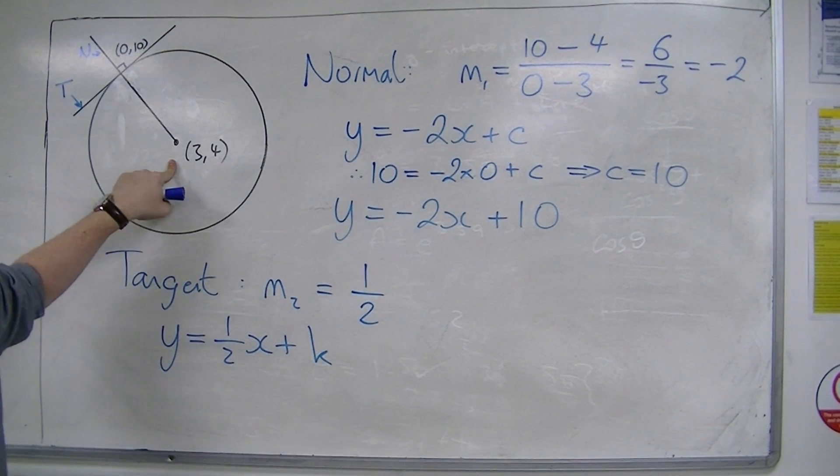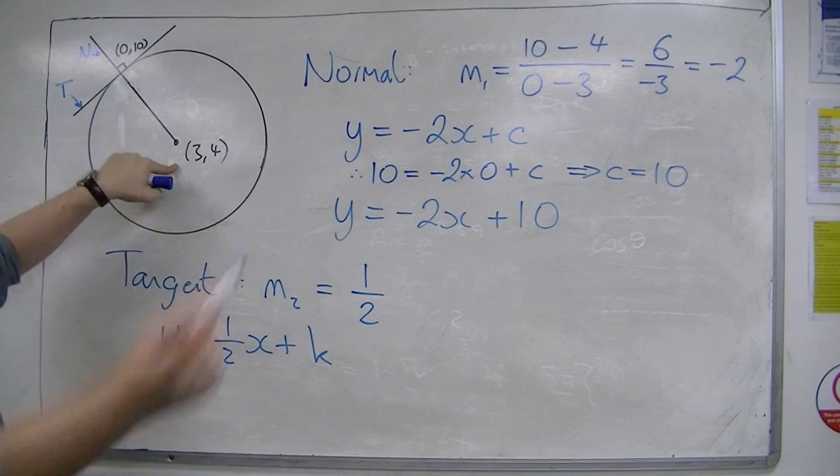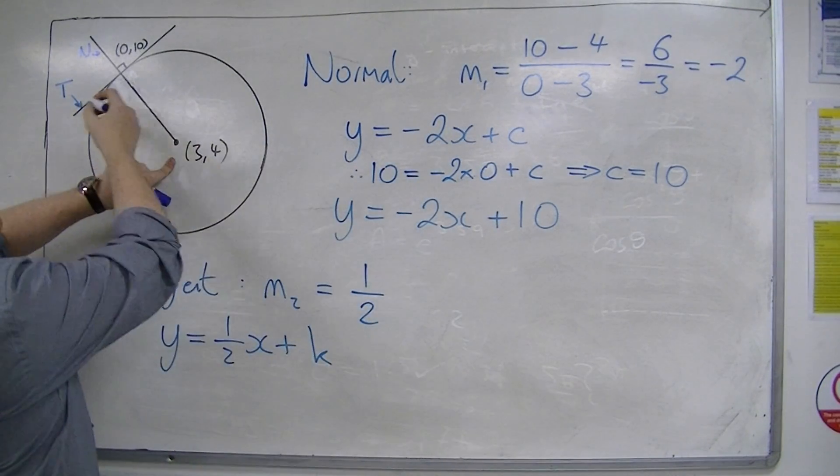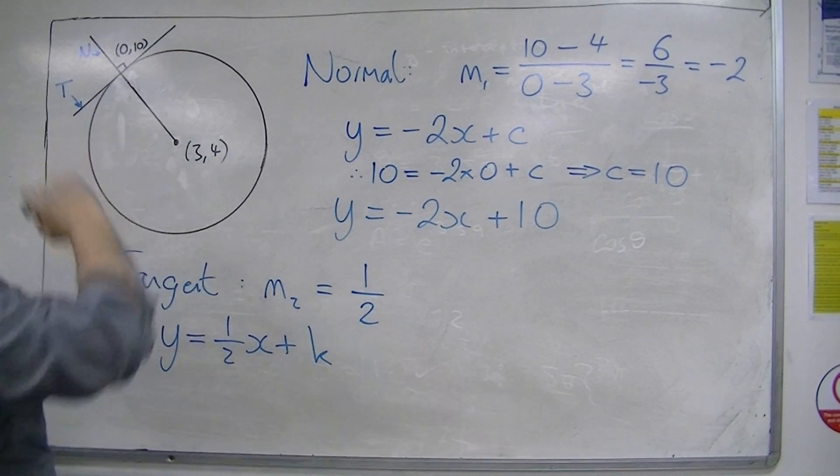I can't substitute in (3, 4), because the line doesn't go through (3, 4). Beforehand, I could have substituted (3, 4) here, and it would have worked fine. But, my tangent line does not go through (3, 4), so I've got to substitute in (0, 10).